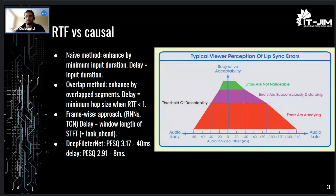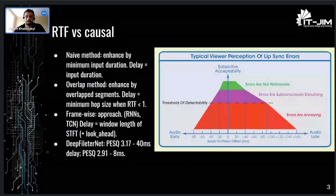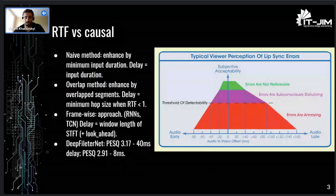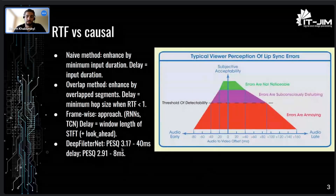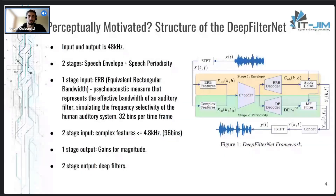DeepFilterNet had several tests for different latency levels. The best values they got were at 40 milliseconds latency, which is when they used look-ahead. Look-ahead means taking only two future chunks, and in this case the PESQ metric — the most popular metric for speech enhancement — was 3.17. When they designed the model for hearing aid devices, they created a version with 8 milliseconds latency, but with slightly worse results. So let's talk about its structure. As you can see from the name, it's perceptually motivated.